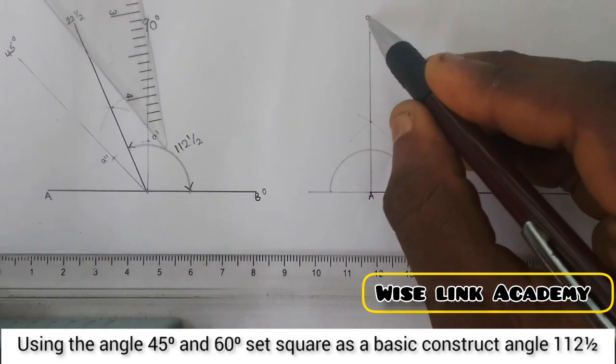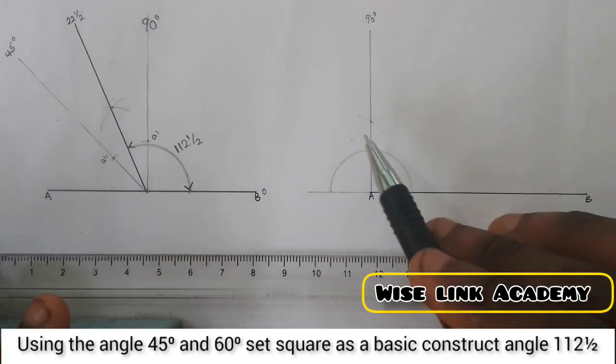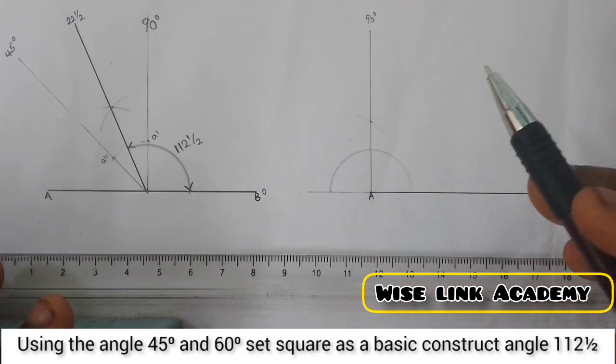So simply take a meter rule to connect A and that point this way. Automatically, here is going to be 90 degree. My next arc is to bisect 90, I get 45.